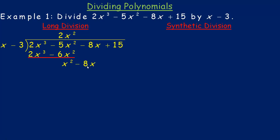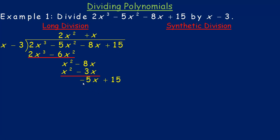Then we bring the negative 8x down. Next, you divide the x into x squared, which goes 1x times, so we put 1x up on top and multiply that by x minus 3 and put that below. We subtract again — x squared minus x squared is nothing. That should always be nothing there. Negative 8x, take away negative 3x, is the same as negative 8x plus 3x, which is negative 5x. Then we bring down the 15, and divide the negative 5x by x. It goes in negative 5 times, so we put negative 5 on top. Negative 5 times x is negative 5x, negative 5 times negative 3 is 15. We subtract and we get a remainder of 0.